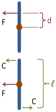A couple is a pair of forces equal in magnitude, oppositely directed, and displaced by perpendicular distance or moment. The simplest kind of couple consists of two equal and opposite forces whose lines of action do not coincide. This is called a simple couple. The forces have a turning effect or moment called a torque about an axis which is normal perpendicular to the plane of the forces.